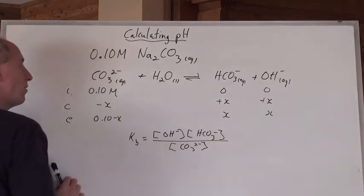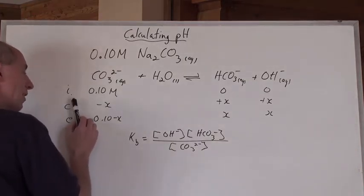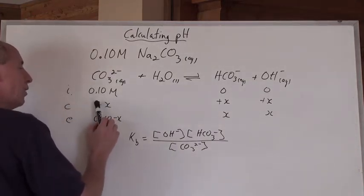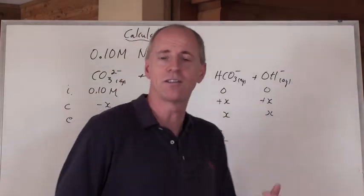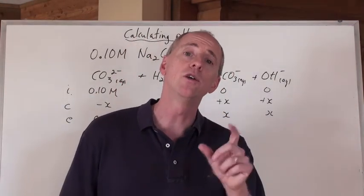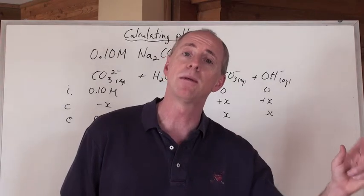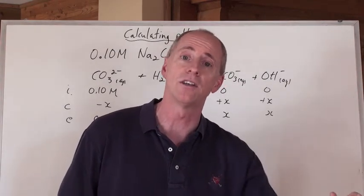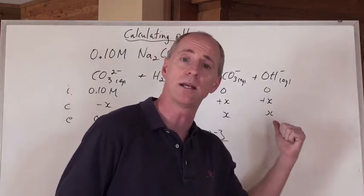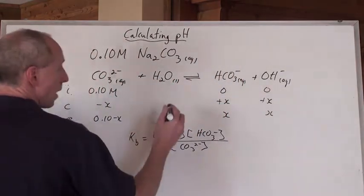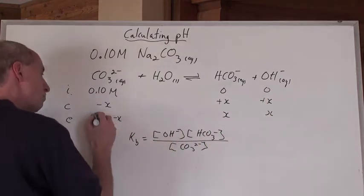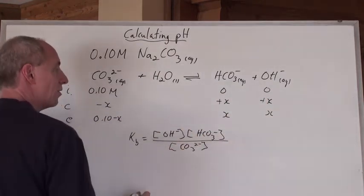So 0.100, icebox. Concentration, initial change, is going to be lose X here, to gain X here, and gain X here. And by the way, if you're looking at this and saying I don't remember this icebox stuff, you've got to go to the equilibrium lessons to be able to remember how to do all of this. Because you've got to do equilibrium chemistry first, before you can calculate pHs of weak acids and weak bases. So there we've got X's and X's. So 0.1 minus X, X and X.